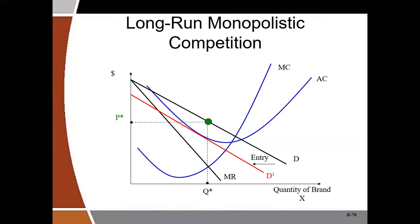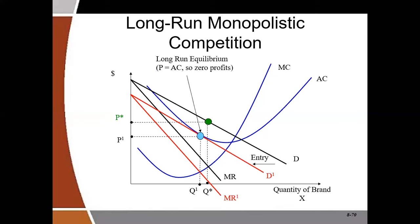It has the same features as a monopoly. The long-run equilibrium also occurs like the monopoly — you can watch the monopoly video. The long-run equilibrium for monopolistic competition is where average cost is equal to the price determined by the quantity at where marginal revenue equals marginal cost. Once you watch the monopoly video, you should understand the long-run equilibrium of monopolistic competition.